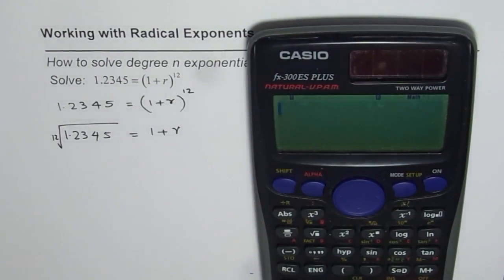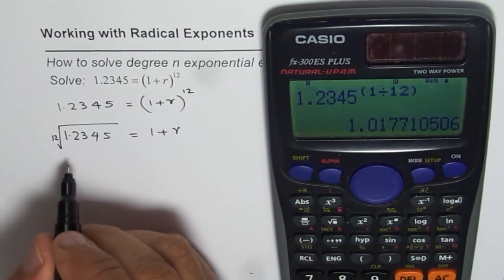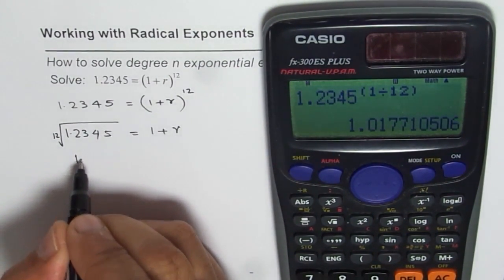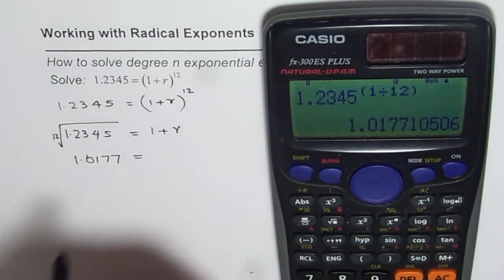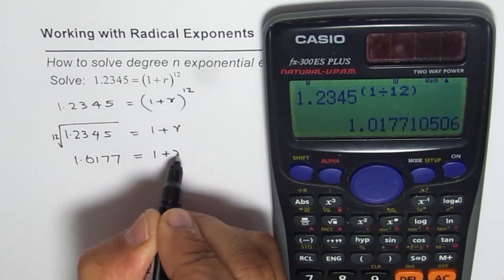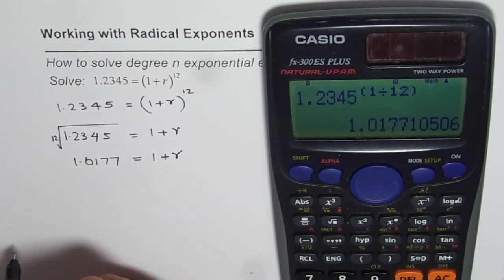So two ways to go about. One, I will say 1.2345 exponent within brackets 1 over 12. 1 divided by 12 bracket close equal to. We get our answer, which is 1.0177, let us round it to this, equals to 1 plus r. So that is the 12th root.